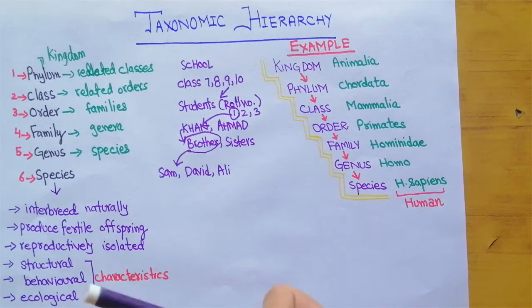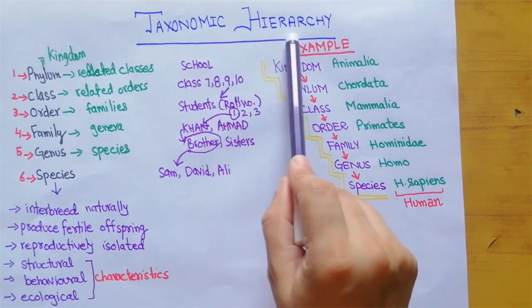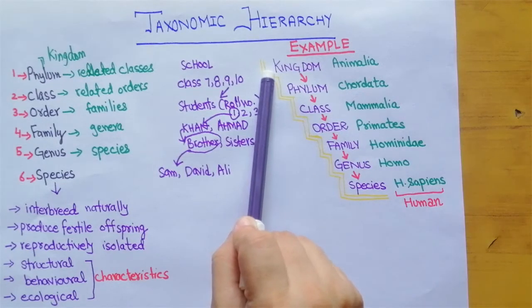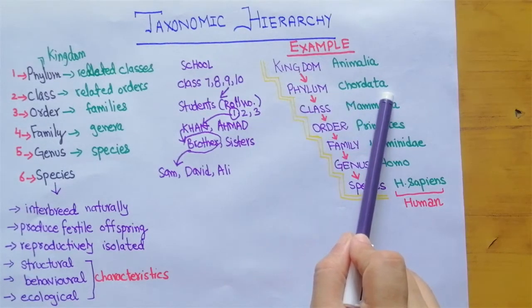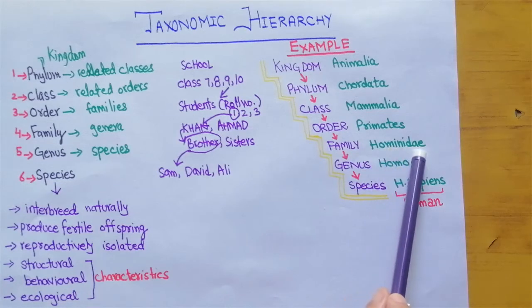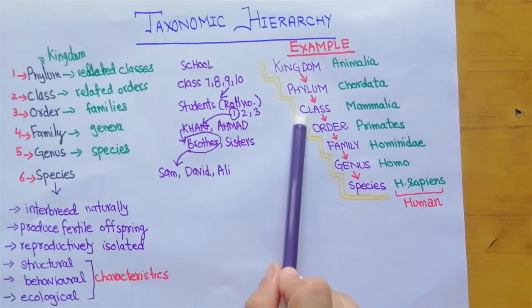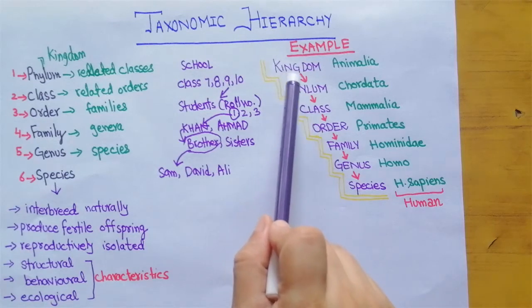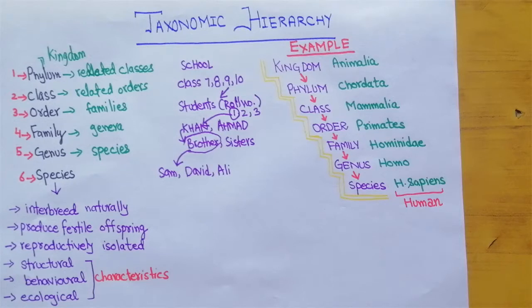Now let's take an example from a biological perspective — the taxonomic hierarchy of human beings. The kingdom is Animalia, phylum is Chordata, class is Mammalia, order is Primates, family is Hominidae, genus is Homo, and the species is Homo sapiens. You can see these form successive levels — a ladder — through which we categorize one particular species. The scientific name of humans is Homo sapiens.